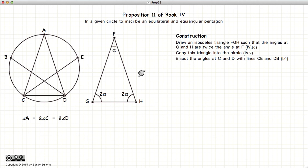Now what we're going to do is we're going to bisect the angles at C and D, extend the lines out, and where they touch the circle, we will label them B and E.